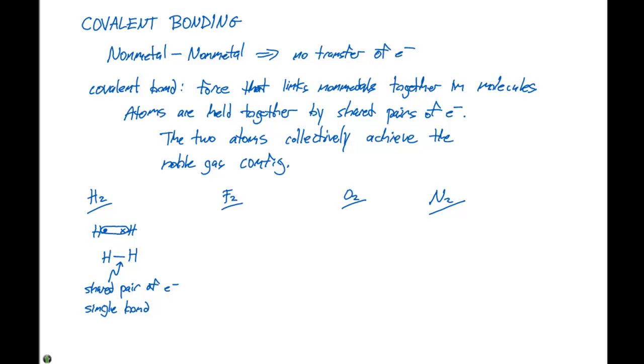For fluorine, these atoms act fairly similar to hydrogen, but in this case we have seven valence electrons on each fluorine. Our Lewis structures indicate that we have seven valence electrons on each fluorine, and they're going to form a covalent bond and share the two electrons that I've circled here.